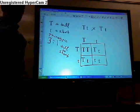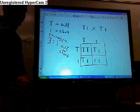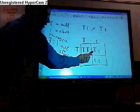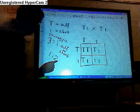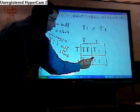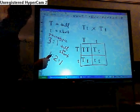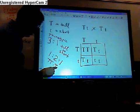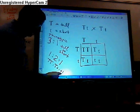The genotypic ratio is the comparison of the sets of letters. I've got one big T, big T, I've got two big T, little t's, and I've got one little t, little t. So that's one to two to one, big T, big T, to big T, little t, to little t, little t.